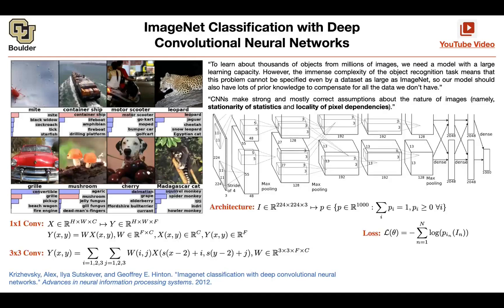Any questions about ImageNet and AlexNet? I have one question. Towards the end, after the last max pooling, the dimension changed to 2048. What exactly did we flatten, and how did it happen? So I'm going to ask you to multiply 128 by 13 by 13 — that number is 21,632. That's the dimension after flattening.